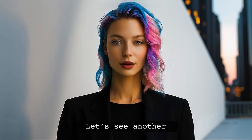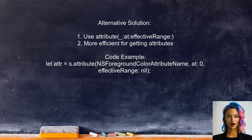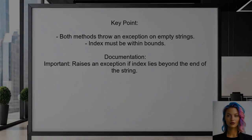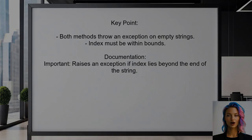Let's see another perspective. An alternative solution suggests using the attribute function instead of attributes. This method is more efficient, especially when you don't need the longest effective range. It's important to note that both methods will throw an exception if called on an empty string — the index must be within the bounds of the string.